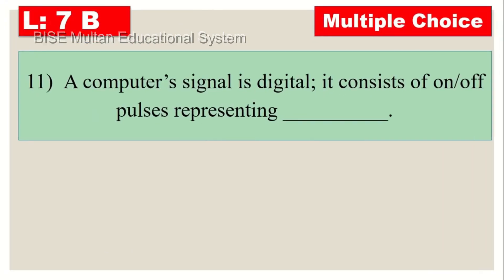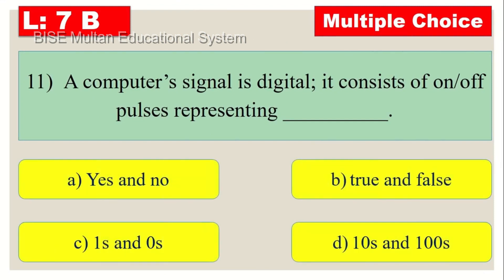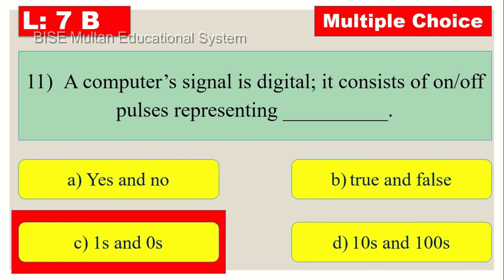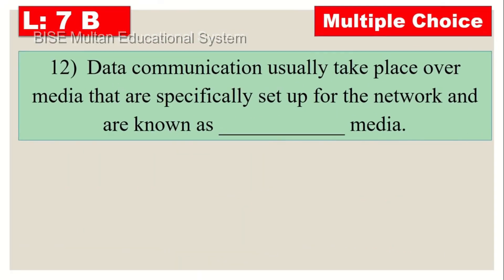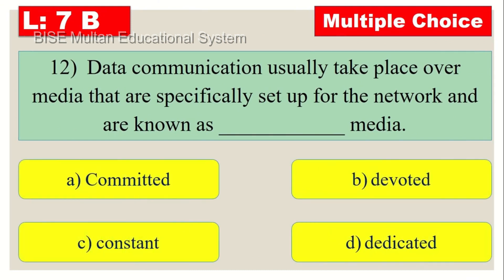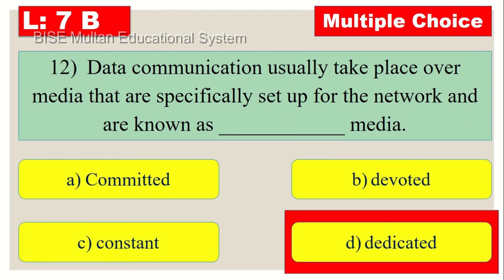Question number 11: A computer's signal is digital; it consists of on and off pulses representing ones and zeros. Question number 12: Data communication usually takes place over media that are specifically set up for the network and are known as dedicated media.